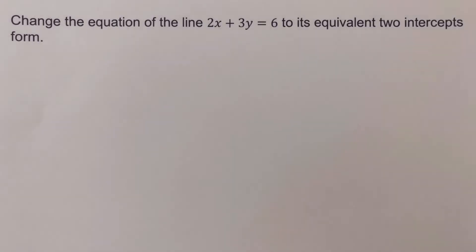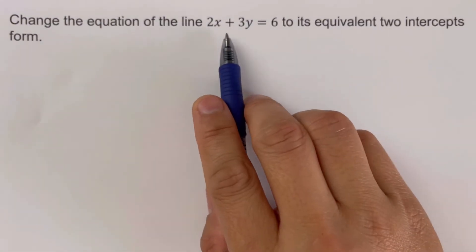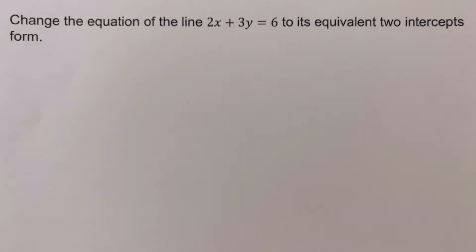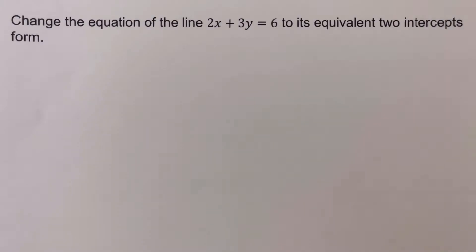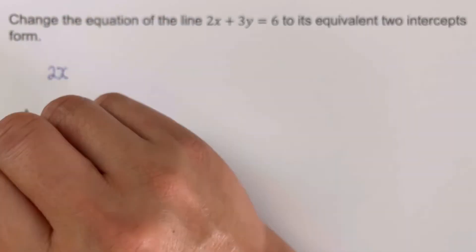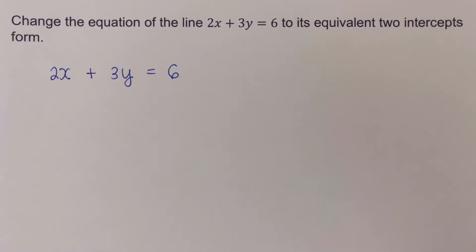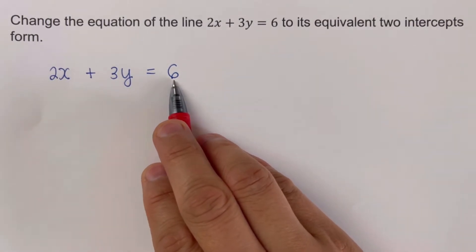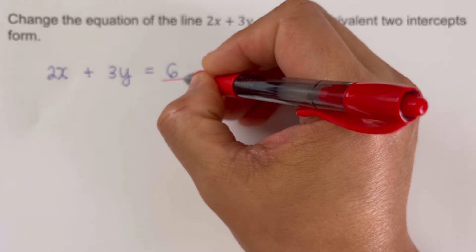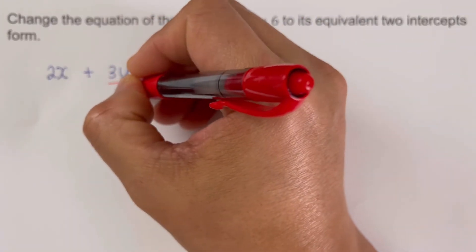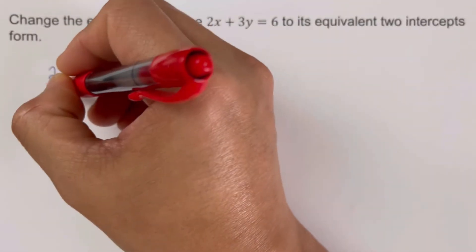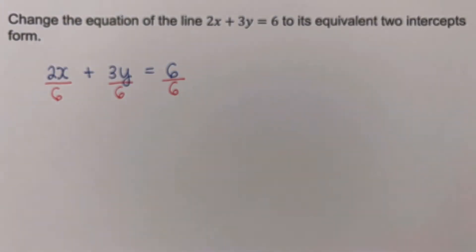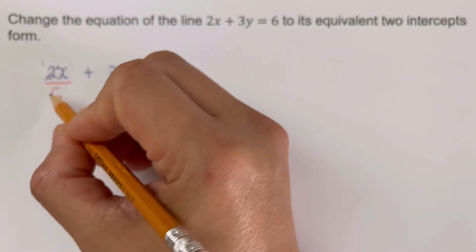Going back to the example: we are given the standard form 2x + 3y = 6 and we are supposed to change it to its equivalent two-intercepts form. In the standard form of a line, the right side of the equation should equal one, so we divide both sides by 6 — dividing each of the terms on the left side by 6 as well.